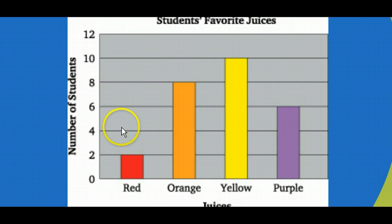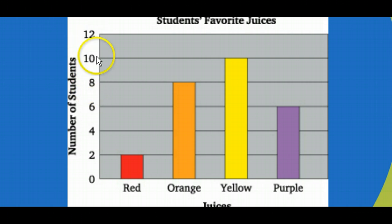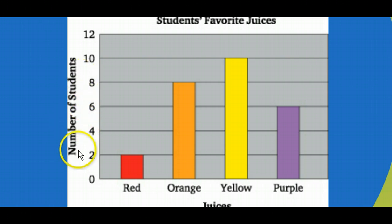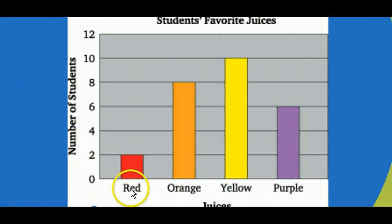It tells us the number of students — zero, two, four, six, eight, ten, twelve — going in increments of two. Sometimes you might see small print that says 'measured in thousands,' which would mean two thousand students. And then each color of juice — red juice, orange juice, yellow juice, purple juice — it's important that you read the labels and understand what parts of the graph are there.